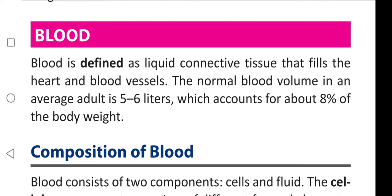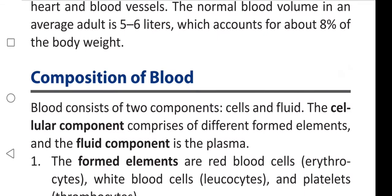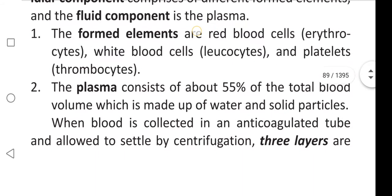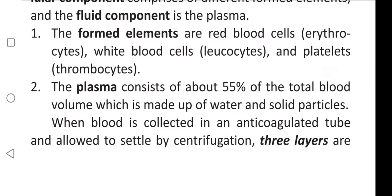The normal blood volume in an average adult is 5 to 6 liters, which accounts for about eight percent of the body weight. Blood consists of two components: cells and fluid. The cellular component comprises different formed elements, and the fluid component is the plasma. The formed elements are red blood cells (erythrocytes), white blood cells (leukocytes), and platelets or thrombocytes.